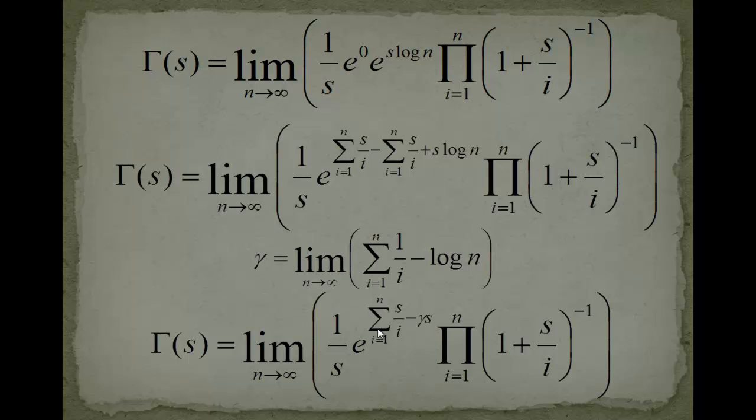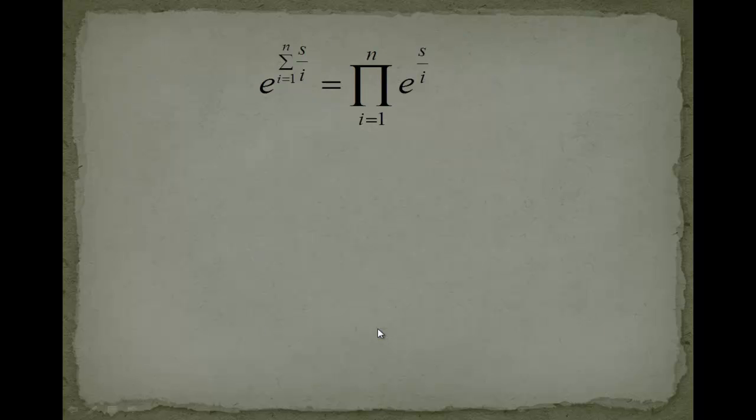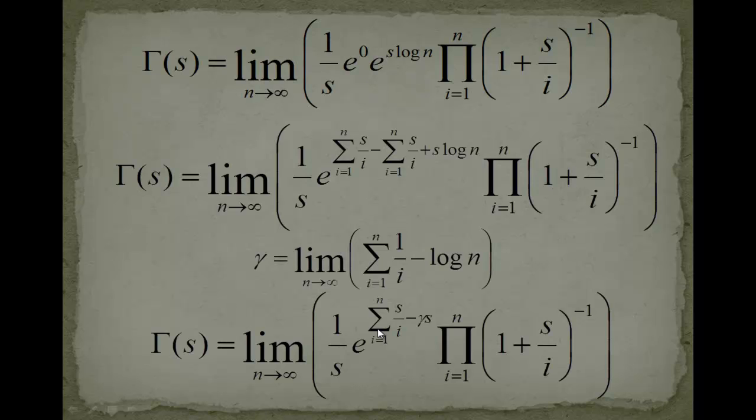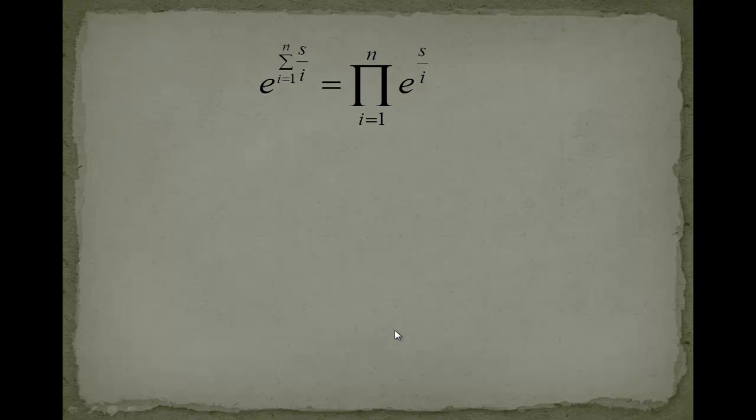Now, we use the last thing that we need to know. I go back maybe and then you see this. This e to the sum of something can be written as a product. E to the s over i. You just, instead of adding the arguments of the exponential, you can just go and multiply exponentials with the corresponding argument.